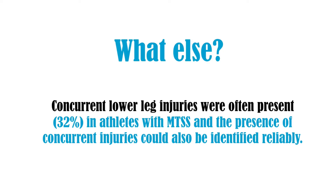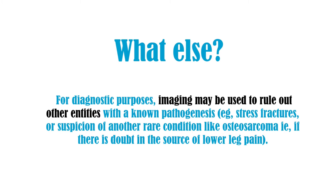Some other findings were pretty interesting. About 32% of these athletes also had a concurrent injury that could be identified reliably. When it came to imaging for diagnostic purposes, imaging could be used to rule out other entities with a known pathogenesis — such as a stress fracture or an osteosarcoma — that didn't fit typical MTSS symptoms and required confirmation.